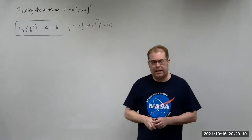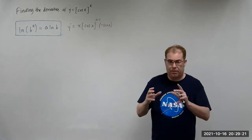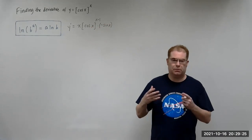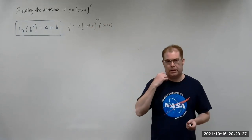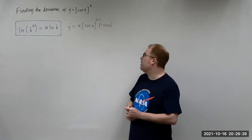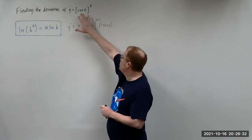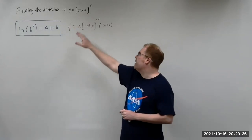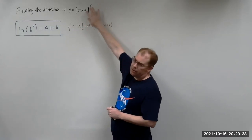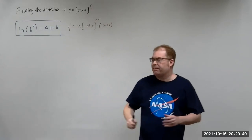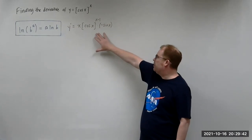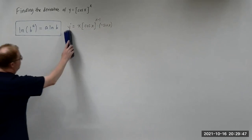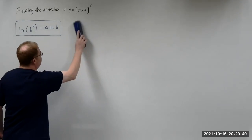You can't use the power rule in this situation. The power rule can only be applied if you have a function raised to some number. That's clearly not what we have here. We have an expression, in this case cosine x, raised to another variable expression. So we can't use the power rule — this is not the correct way to do this.